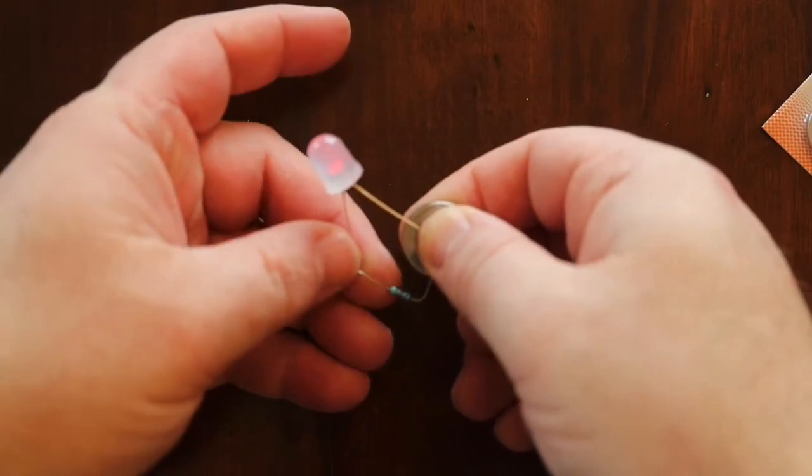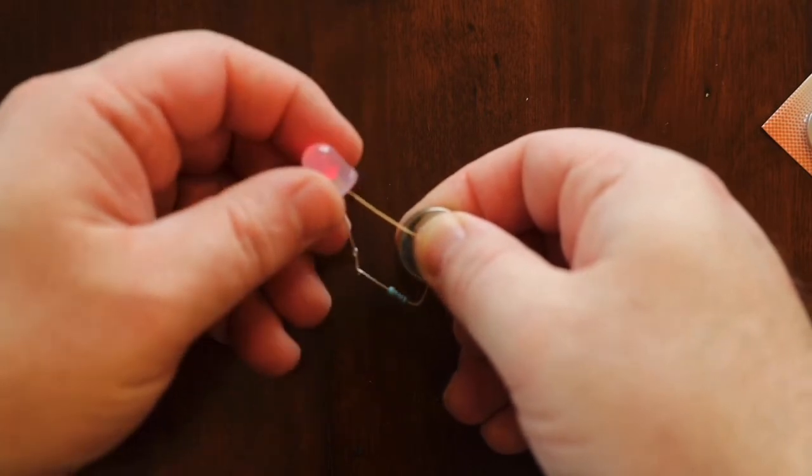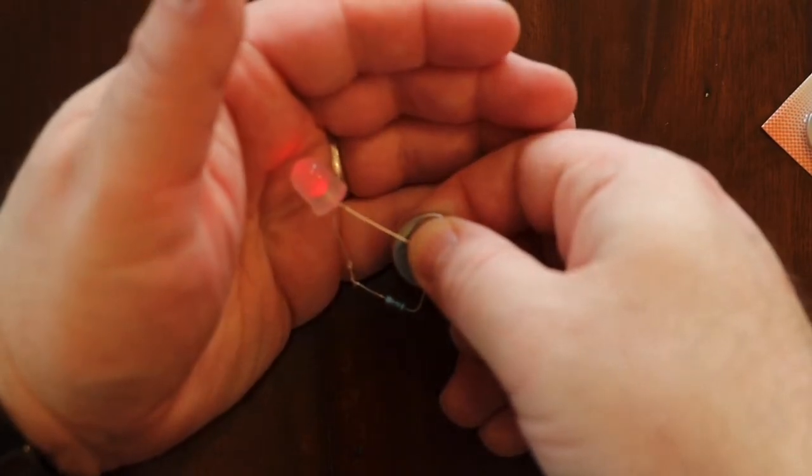So the resistor in the circuit as it's been introduced makes the LED a little bit dimmer.